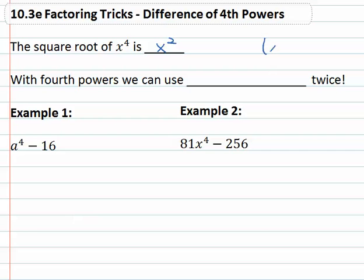That comes from using the property that if we took x squared and we were to square it, we would multiply the exponents, get x to the fourth. So the square root going backwards is just the x squared.